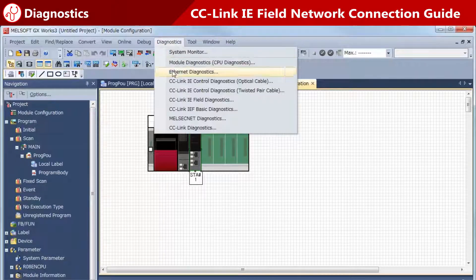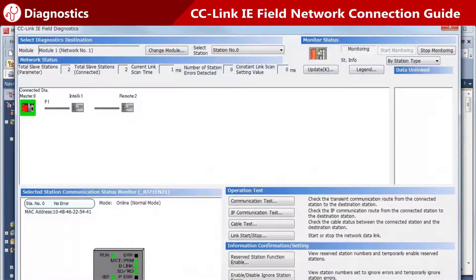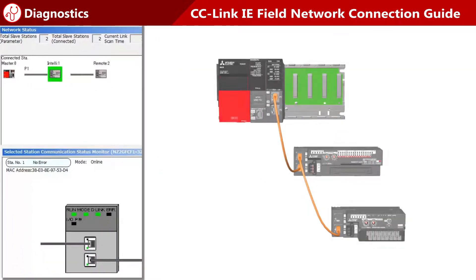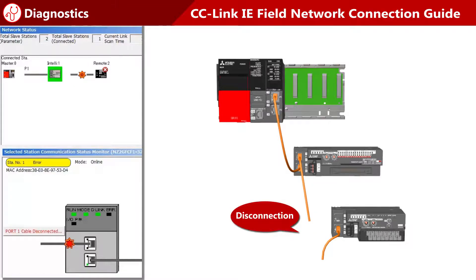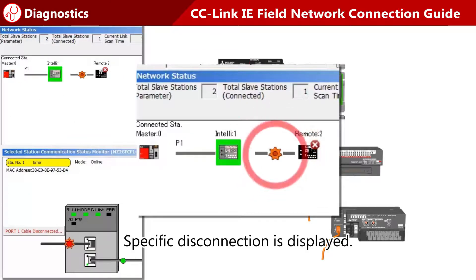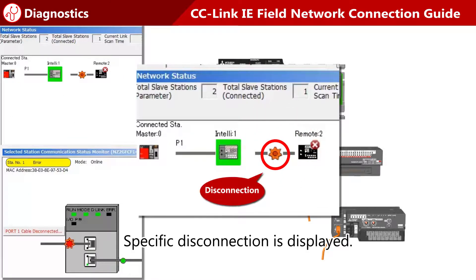Open the Diagnostics window. Network configuration is visually represented as similar to the actual wiring on the screen. When there is a disconnection somewhere in the network, the specific disconnection is displayed in an easily understandable graphical format.